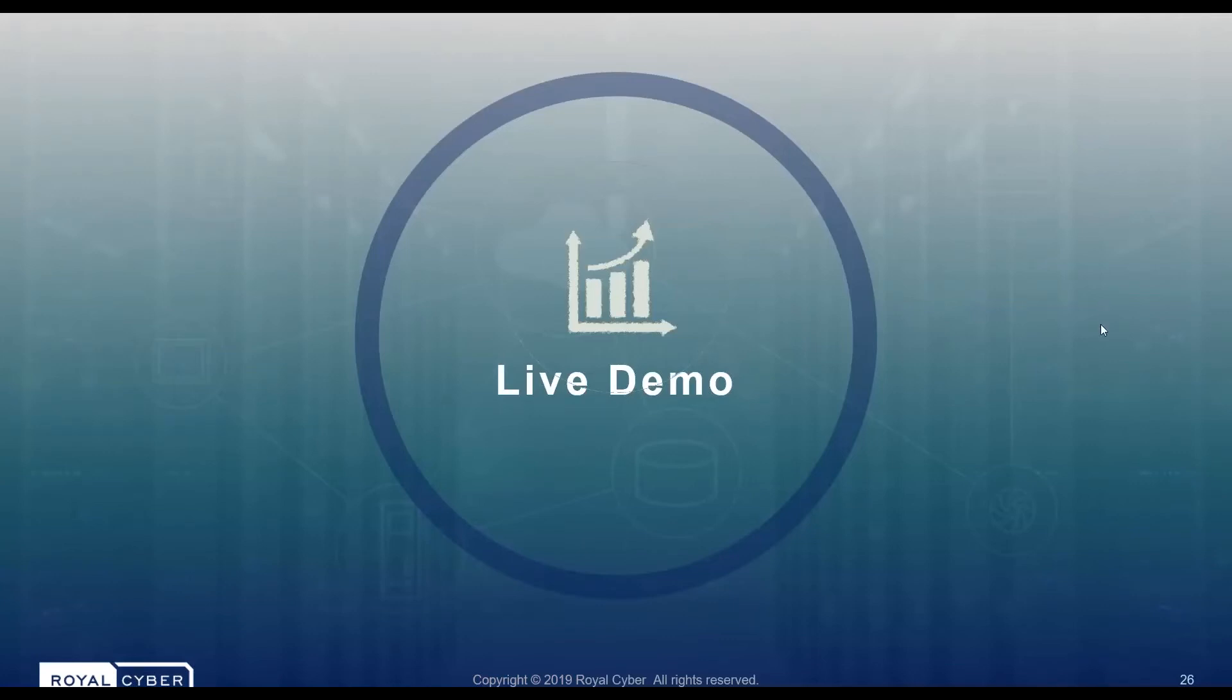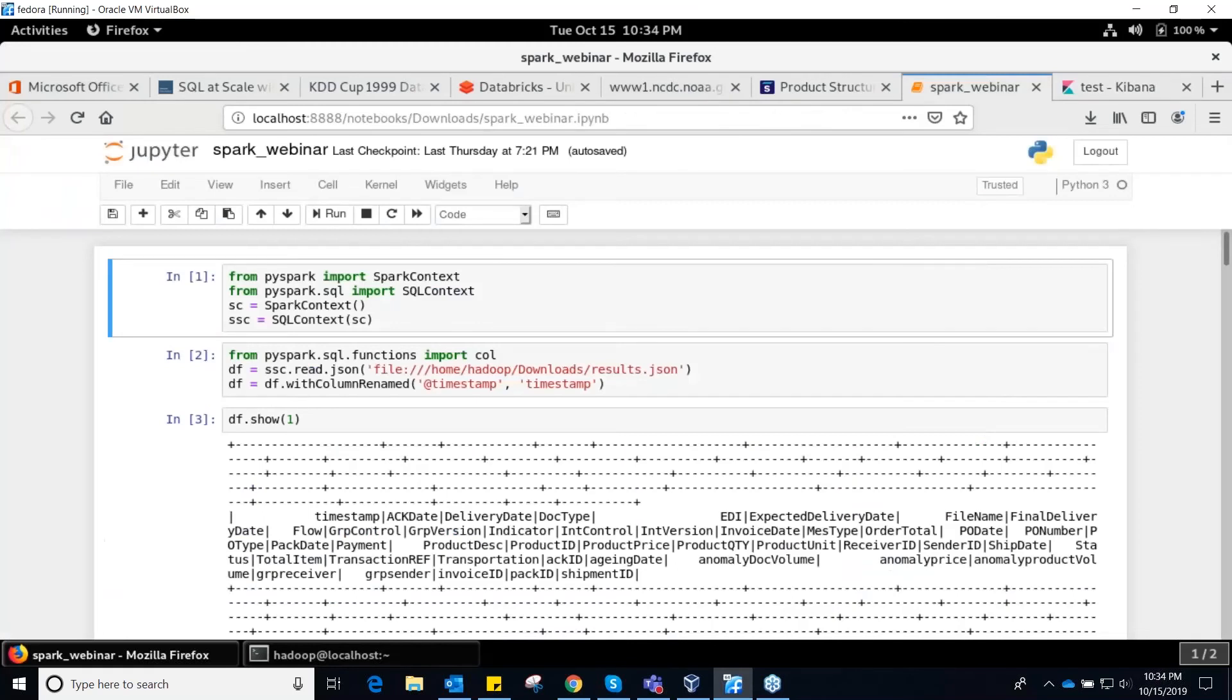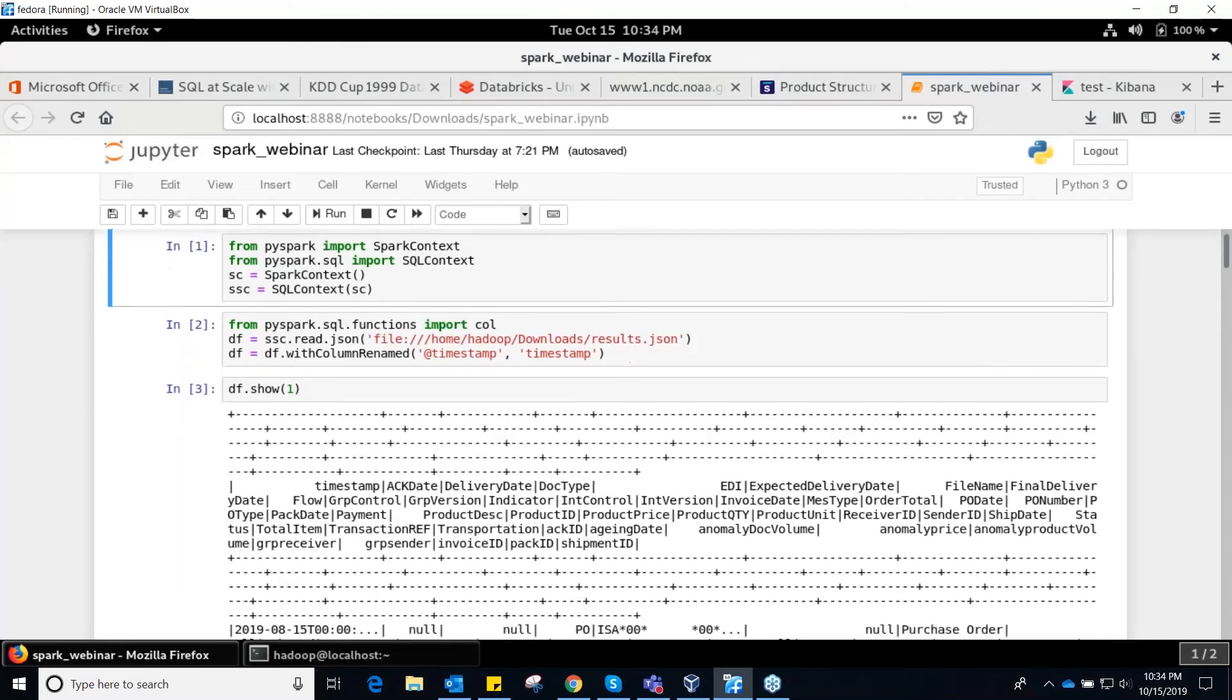Thanks Samir. Let's first have a look at our use case. Basically, we have some data from one of our internal products. What that product does is it monitors business processes and business transactions. The product itself is called Monitor Pro, and you guys can check it out at Royal Cyber's website. In this case, what we have done is we have tried to showcase how we can combine the power of Spark with Elasticsearch. Without any further detail, let's have a look at this.